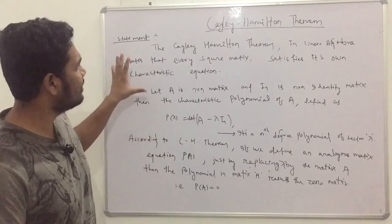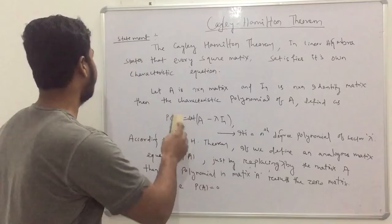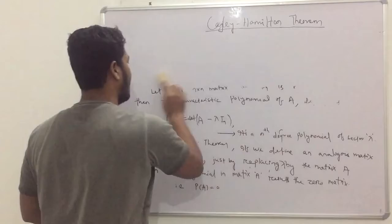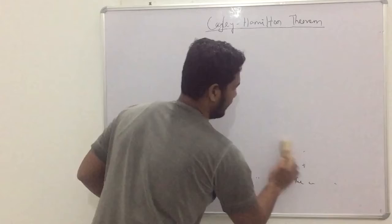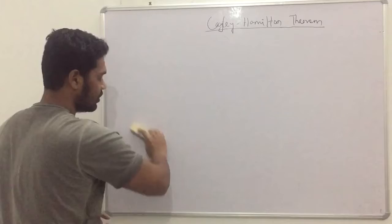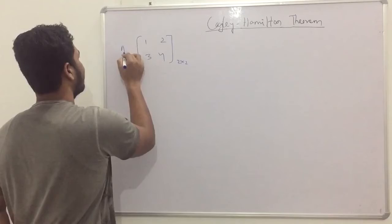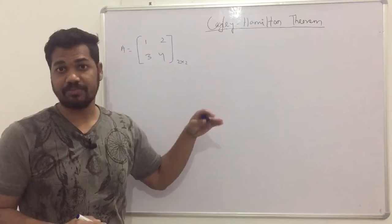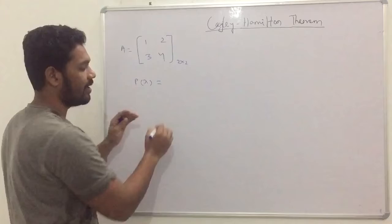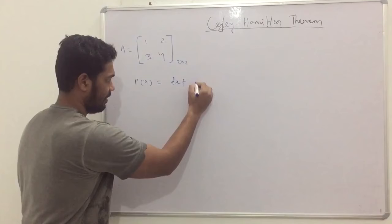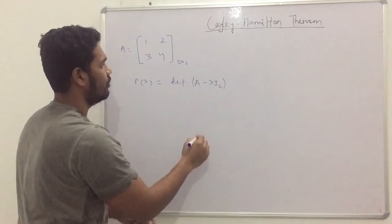You can verify the Cayley-Hamilton theorem using a good example of order 2×2. Let's see and verify the theorem first, then we will look at its application in matrix algebra. So let's assume an arbitrary 2×2 matrix as A = [1, 2; 3, 4]. This is a simple 2×2 matrix. Let's find its characteristic polynomial by computing P(λ) = determinant of (A − λI), where λI₂ is the 2×2 identity matrix scaled by λ.